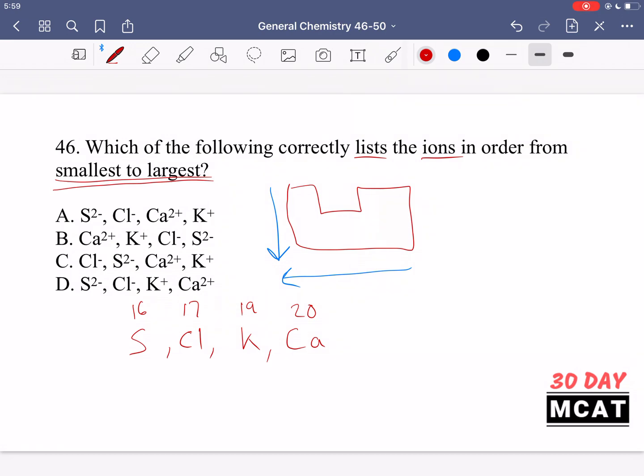The more protons something has, the smaller it is because it holds those electrons in more tightly. In this case, the calcium 2+ is the smallest, we're going from smallest to largest, then the potassium +, then chloride, and then the sulfur. So B is the correct answer.